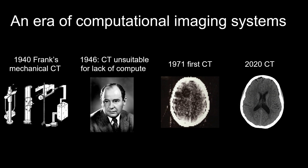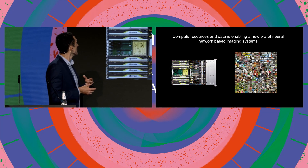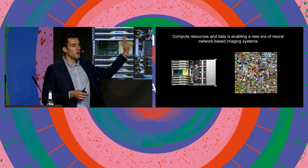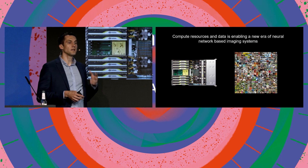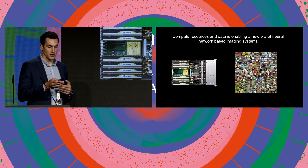This is the first CT reconstruction, and we've come a long way — this is what you get in 2020: a very sharp image. What's happening now is that there is an era of neural network-based imaging systems. The reason why that's happening is we now have much more compute — very powerful GPUs — and also a lot of data. The availability of compute and data is enabling this new era of neural network-based imaging systems.